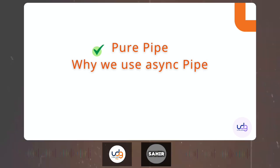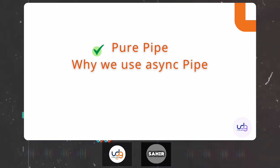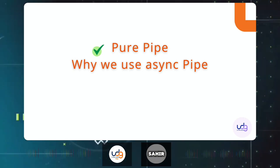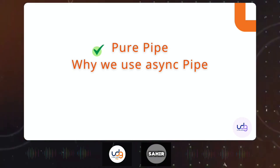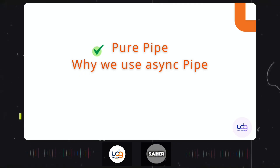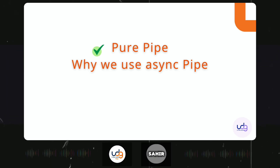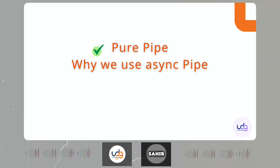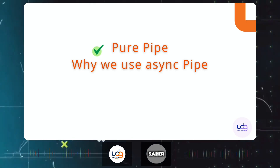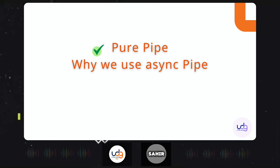Interviewer: Do you know any example of impure pipes? Candidate: For example, we have a search pipe. With an impure pipe, it will reload and search for whatever we type in real time. If we have a component where we add something, and we search — in a pure pipe it won't reload after adding, but in an impure pipe it will reload and show the newly added item as well.